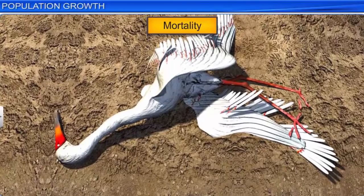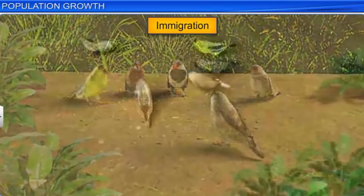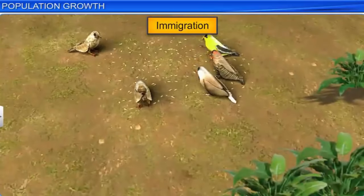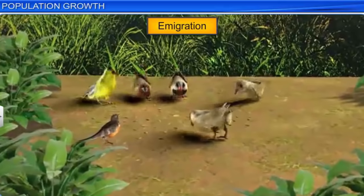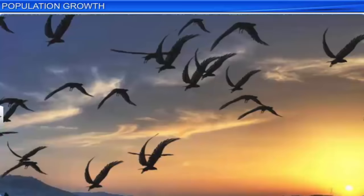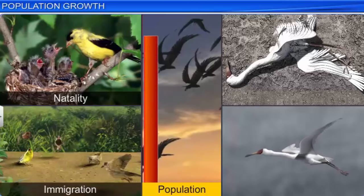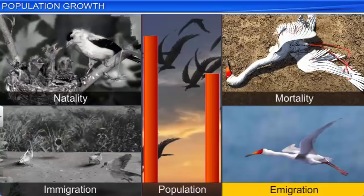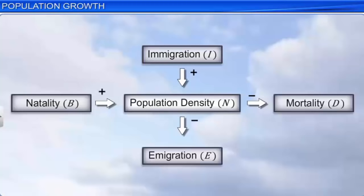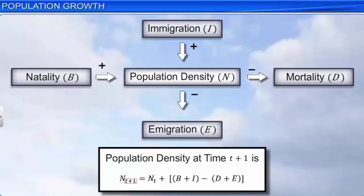Natality is the number of births in the population that are added to the initial density during a given period. While mortality is the number of deaths in the population during a given period. Immigration is the number of individuals of the same species that come into a particular habitat from elsewhere during a given period. While emigration is the number of individuals of a population who leave a particular habitat and go elsewhere during a given period. In a population, natality and immigration result in an increase in population density, while mortality and emigration result in a decrease in population density.